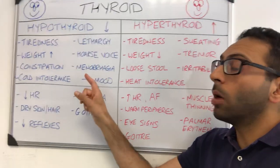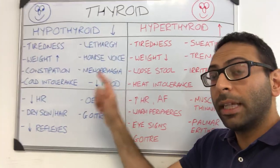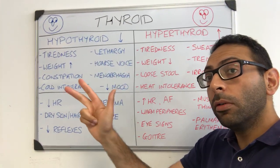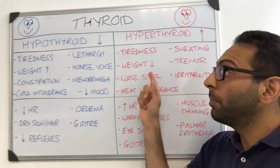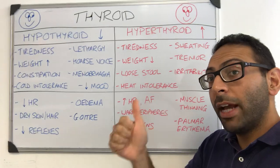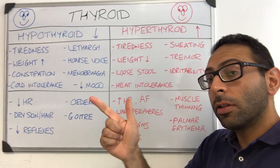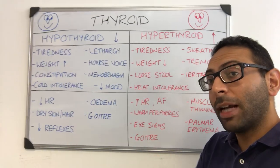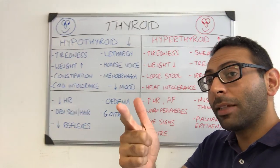So hypo or underactive thyroid: think blue, slow, low. Hyper or overactive thyroid: think red, hot, warm. Hope this helps — can pass, will pass.